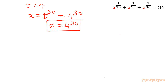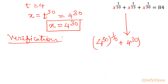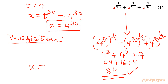Let us verify the value. Putting x equal to 4 to the power 30 into the original equation: (4 to the power 30) whole power 1 over 10, plus (4 to the power 30) whole power 1 over 15, plus (4 to the power 30) whole power 1 over 30. Simplifying the exponents gives 4 cubed plus 4 squared plus 4, which equals 64 plus 16 plus 4, which equals 84. This confirms that x equals 4 to the power 30 is the correct solution.